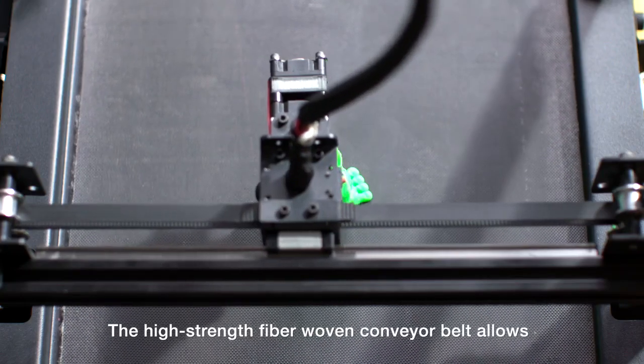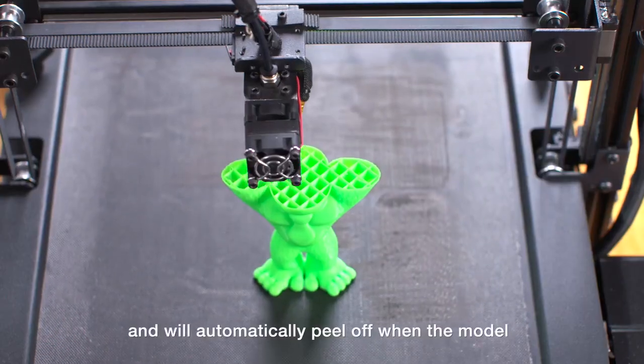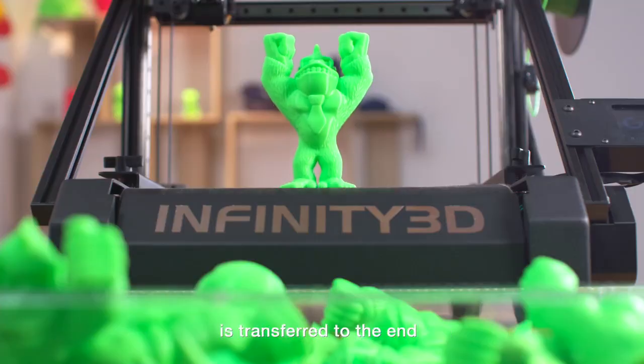The high-strength fiber-woven conveyor belt allows the model to stick firmly and will automatically peel off when the model is transferred to the end.